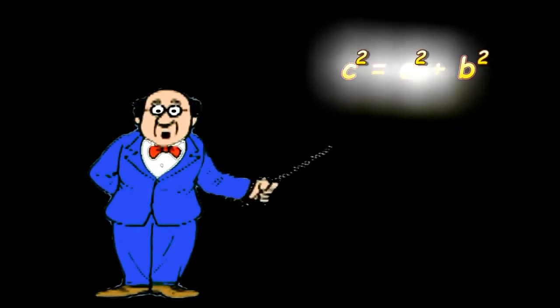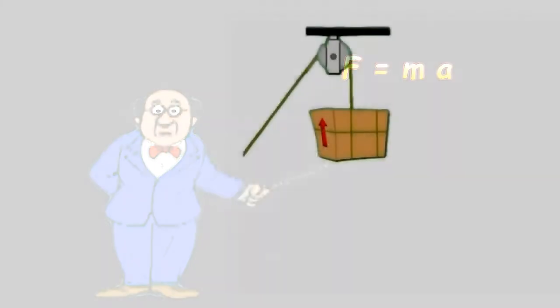Take for example a simple case. A box being pulled by a rope run through a pulley. A mathematician removes the objects and replaces them with abstract concepts.